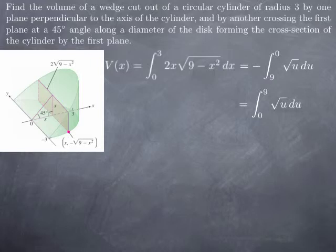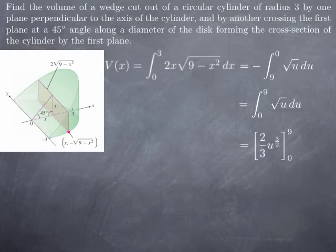The antiderivative of root u is 2 thirds u to the 3 halves. And I need to evaluate this antiderivative between 0 and 9. The value at 0 is going to be 0. The value at 9, 9 to the 3 halves is 9 to the 1 half, which is 3, to the cube, so we get 27. And we get 2 thirds of 27. 27 over 3 is 9, so we get 18.